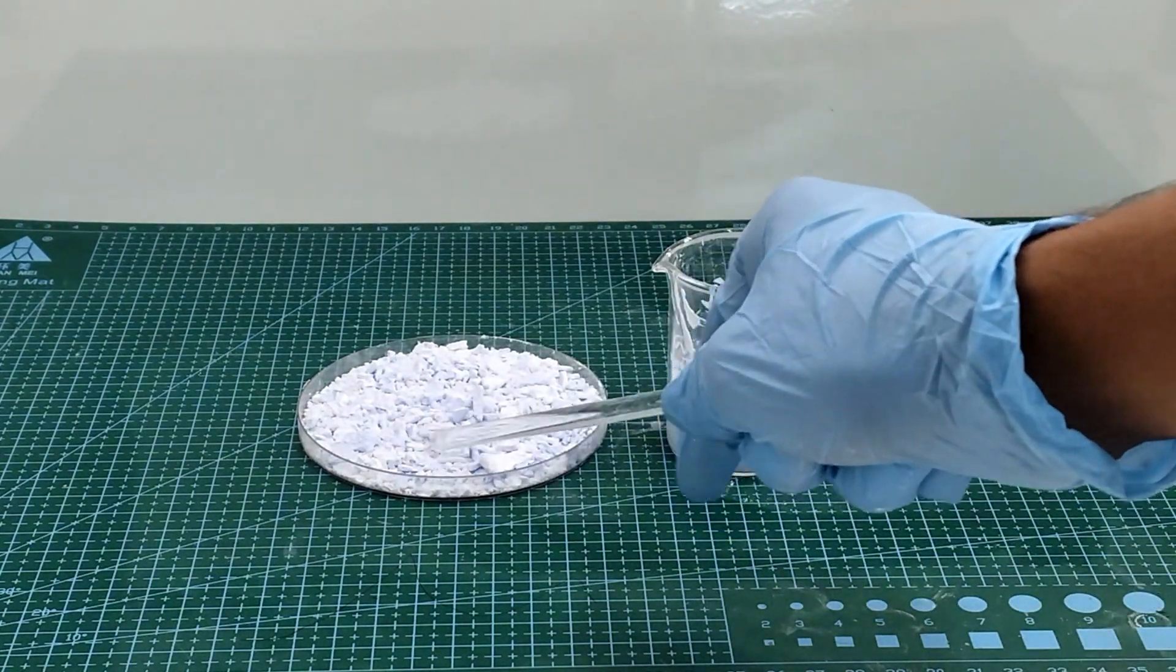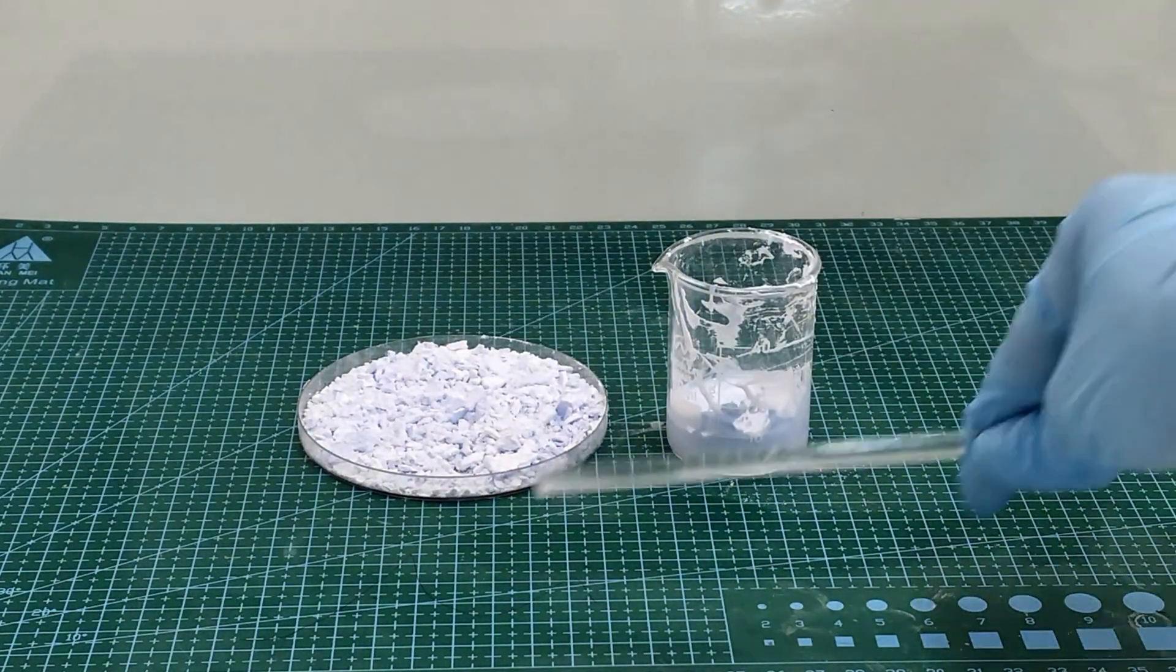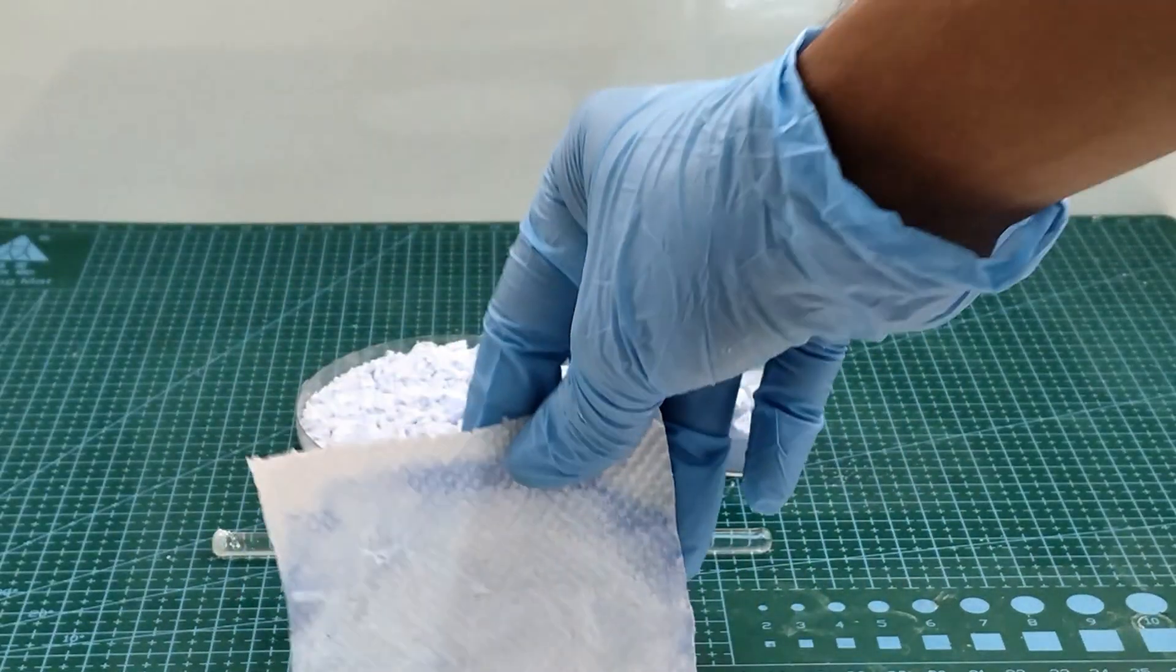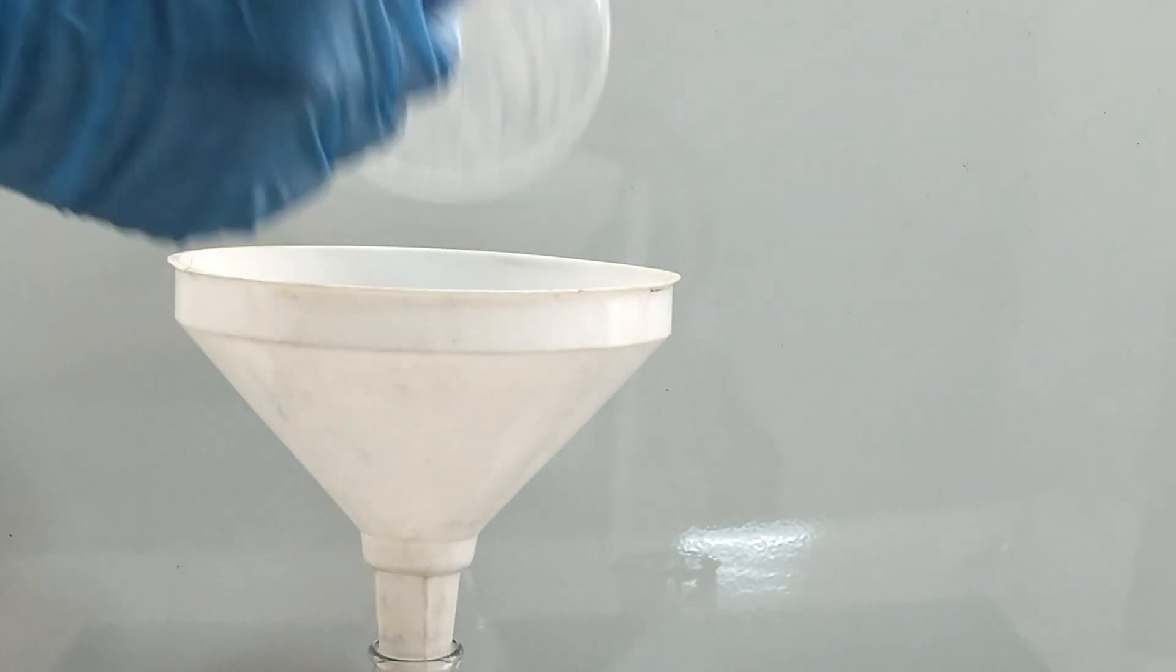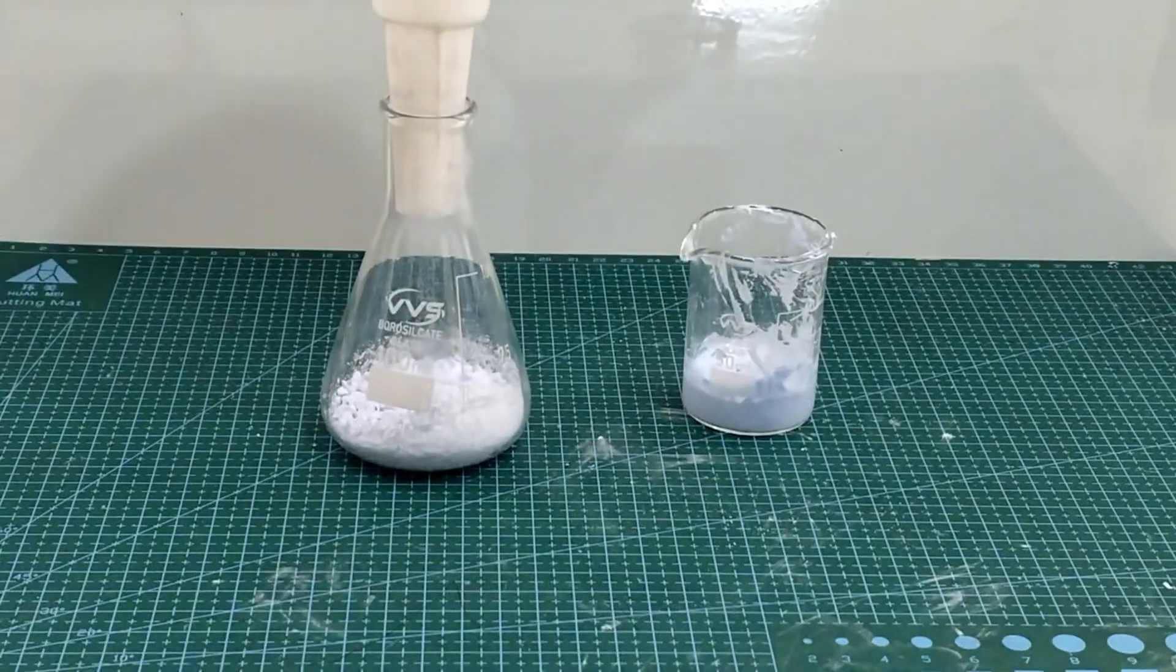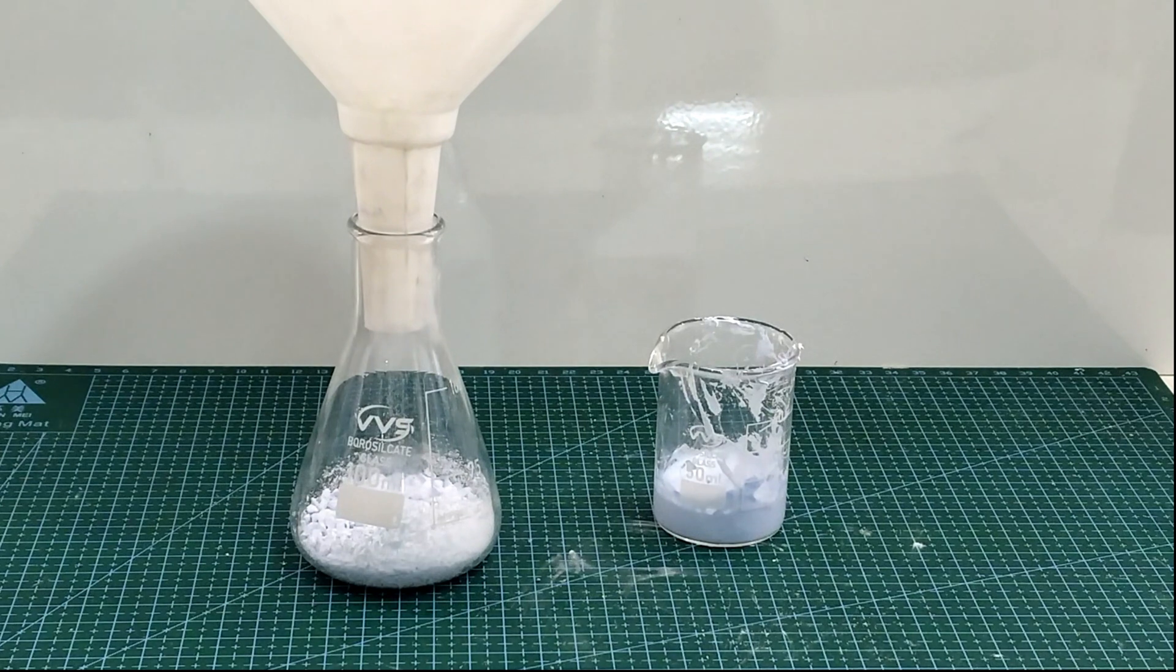This is all the glutamic acid that I have obtained. Now we move on to recrystallization. This is required to remove any of the impurities such as the dyes that still remain in the glutamic acid.